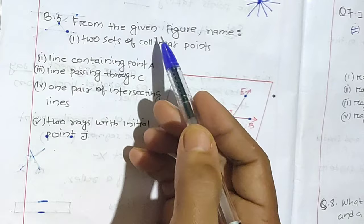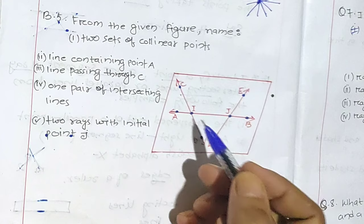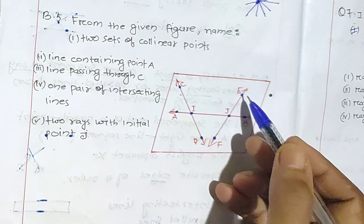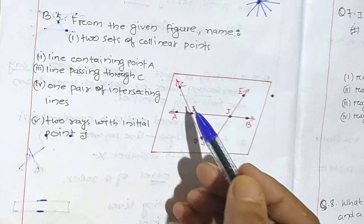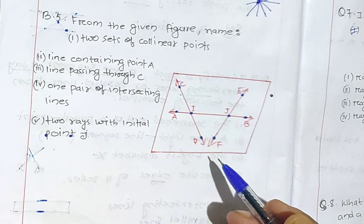From the given figure, name two sets of collinear points. Collinear points will have three or more points lying on the same line. Here, point 1, point 2, point 3 — they all lie on the same line. Here also point 1, point 2, point 3 — they all lie on the same line. That is why they are called collinear points. Non-collinear points will not lie on the same line.